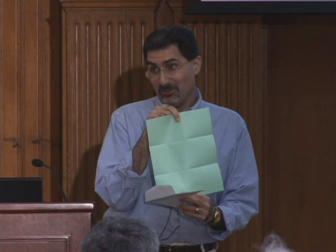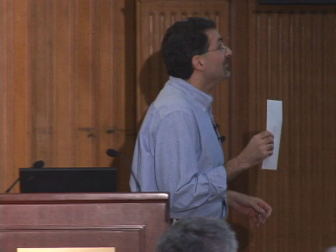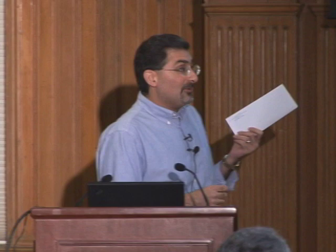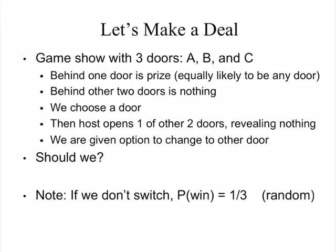I've revealed that one of the envelopes doesn't contain the prize. Now I'm going to give you the option to change for the other envelope. Should you? Using probability theory, you can think about whether it makes sense to switch. If you don't switch, your probability of winning is 1/3, because your selection was random and it doesn't matter that I showed you some information — the money was in one of the three envelopes and you picked one.